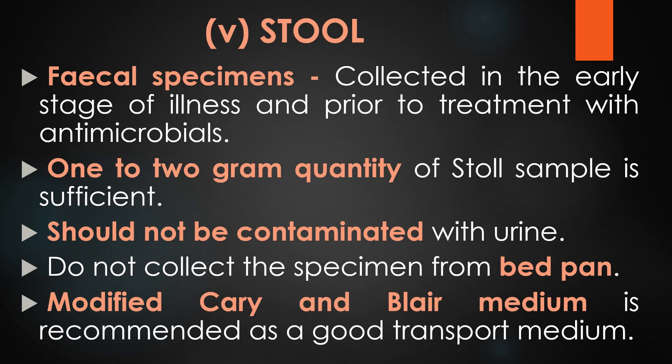Next is collection of stool samples. Fecal specimens for the etiological diagnosis of acute infectious diarrhea should be collected in the early stage of illness and prior to treatment with antimicrobials. Collect the stool specimen during the early phase of the disease, before administration of antimicrobial agents. One to two grams of stool sample is sufficient for microbiological analysis. The fecal specimen should not be contaminated with urine. Do not collect the stool sample from a bedpan. The modified Cary-Blair medium is recommended as a transport medium for stool specimens; it is a very stable, semi-solid medium that can be stored in screw-capped containers.